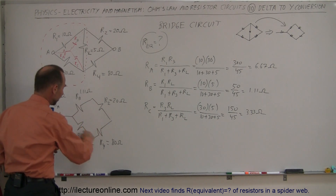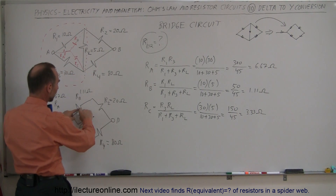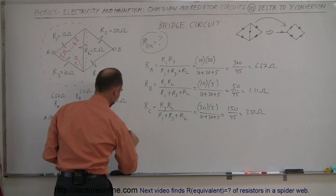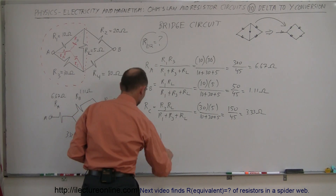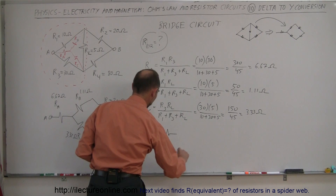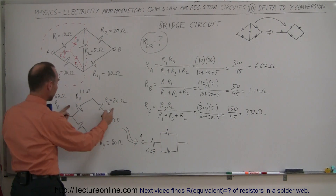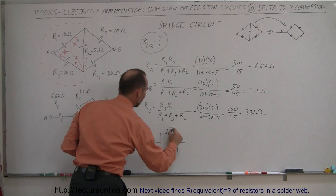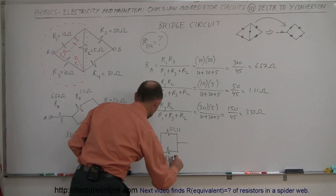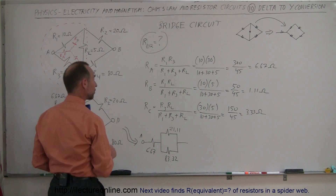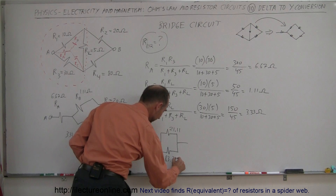Notice that in the Y circuit, two resistors are in series on one branch and two are in series on the other branch, with Ra still at point A. We redraw the circuit by combining those pairs. So we still have the single 6.67-ohm resistor connected to A. On one branch we add 20 plus 1.11, giving 21.11 ohms. On the other branch we add 80 plus 3.33, giving 83.33 ohms.